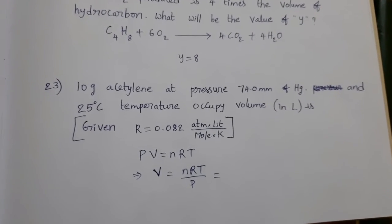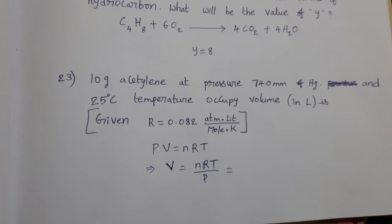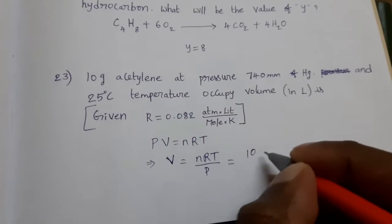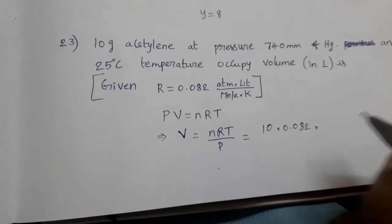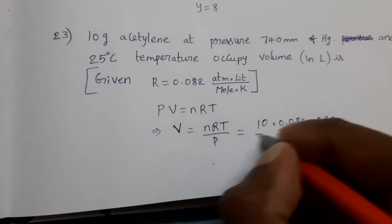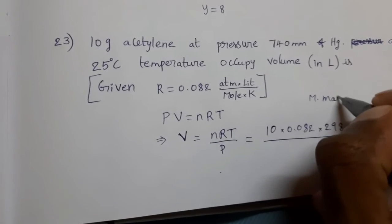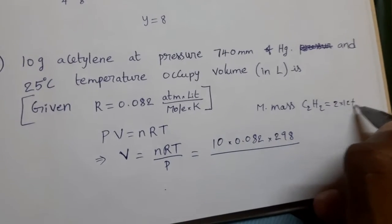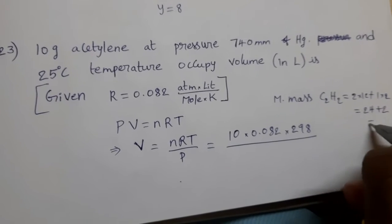Here, gas is acetylene. Its weight is given 10 grams. We want number of moles. Given mass of acetylene divided by molar mass of acetylene. Given mass 10 into R value 0.082 into temperature 25 degree Celsius. In Kelvin, 298. Here, number of moles means mass by molar mass. What is molar mass of acetylene? See this, C2H2. 2 into 12 plus 1 into 2. 24 plus 2. That equal to 26.